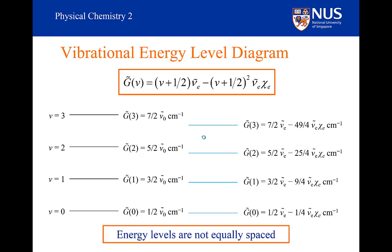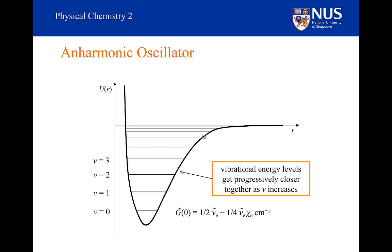The fundamental thing is that the levels are not equally spaced — they are getting closer and closer together as we approach the dissociative limit. We can imagine there is a maximum vibrational quantum number v max beyond which the molecule will dissociate. In fact, we can calculate what v max is by differentiating our vibrational term expression.